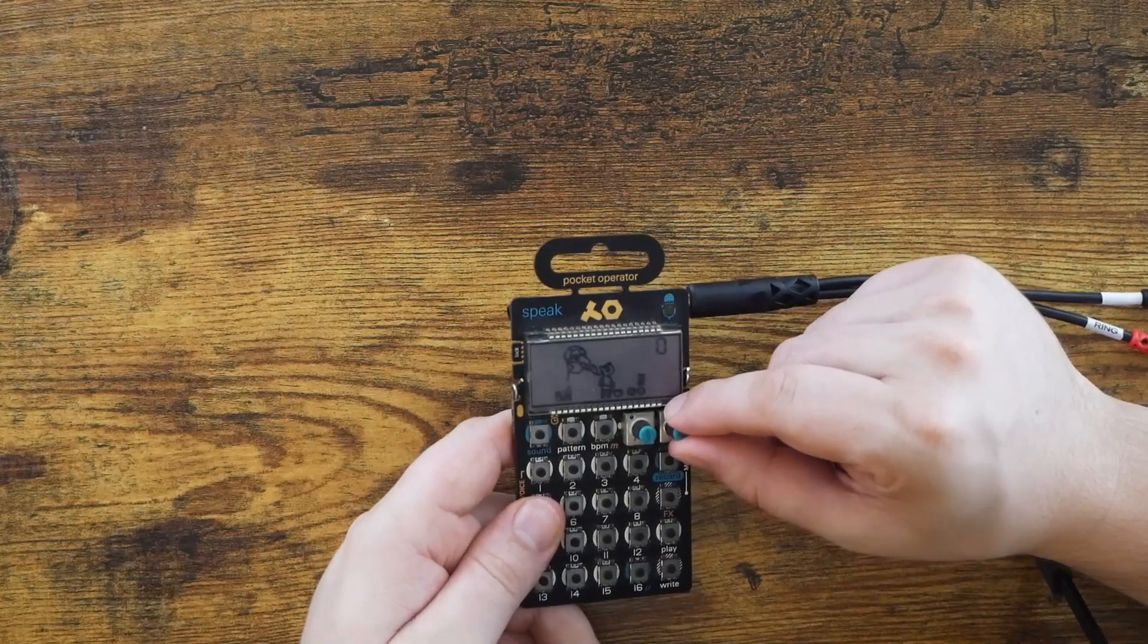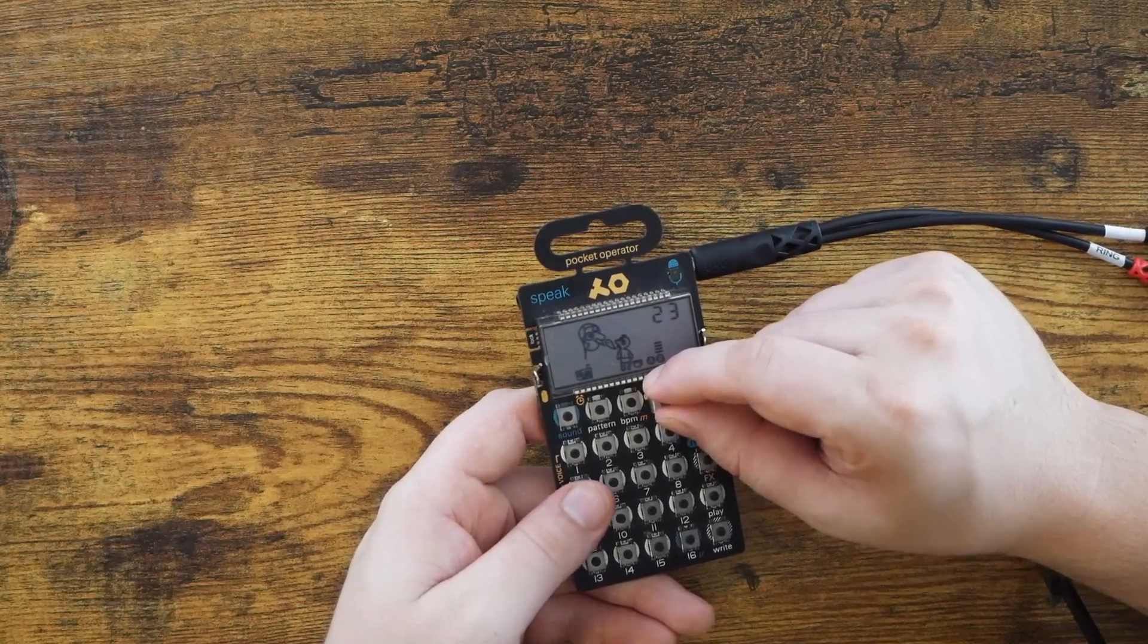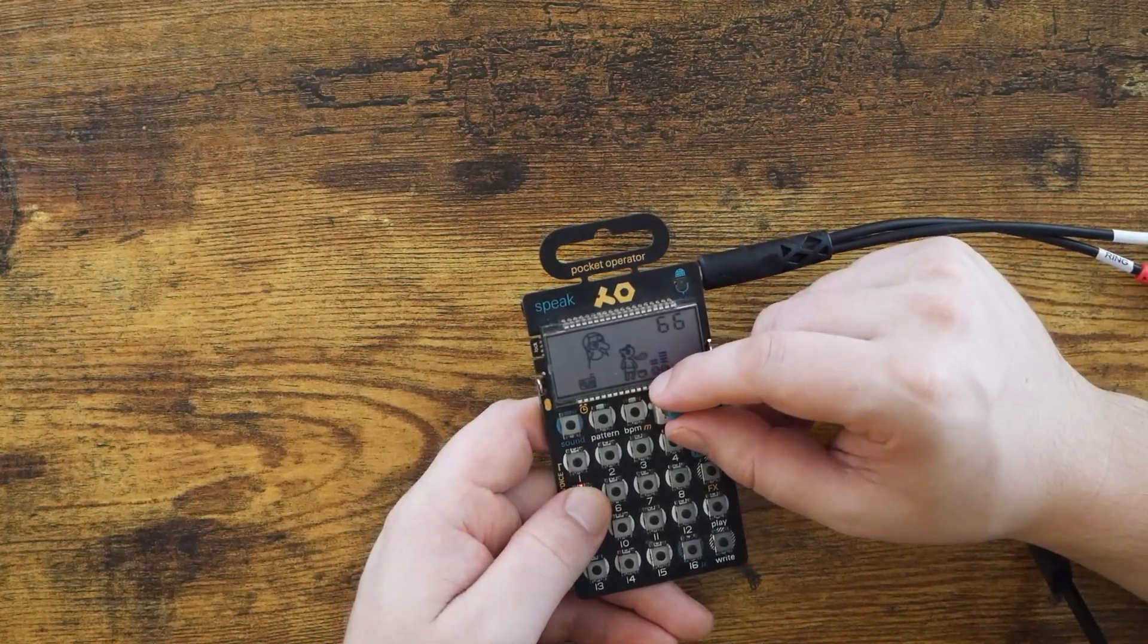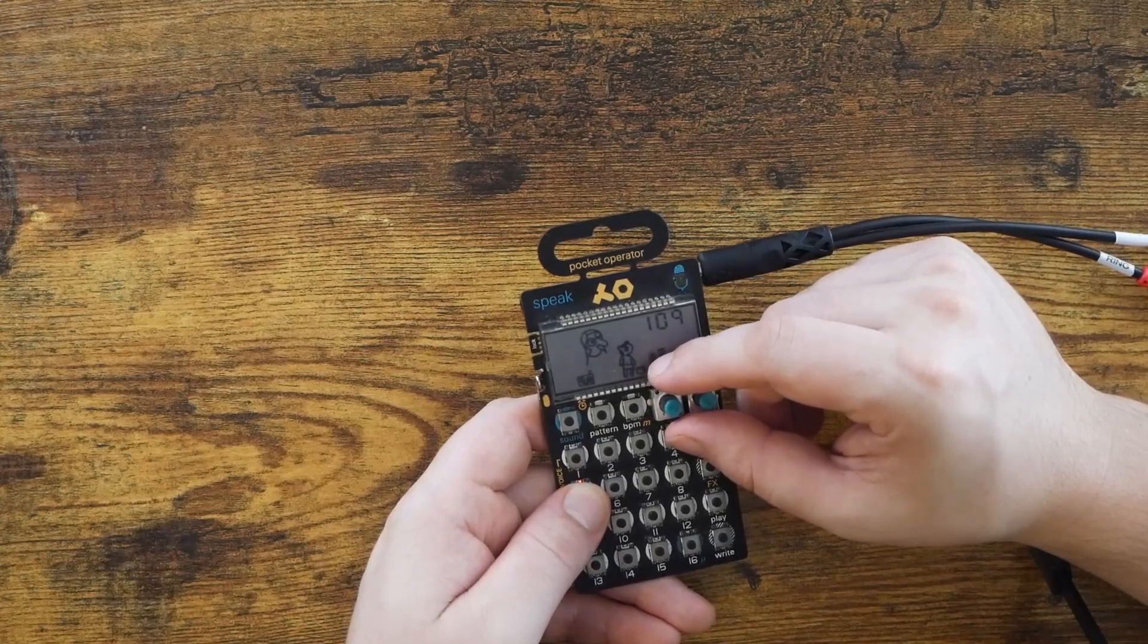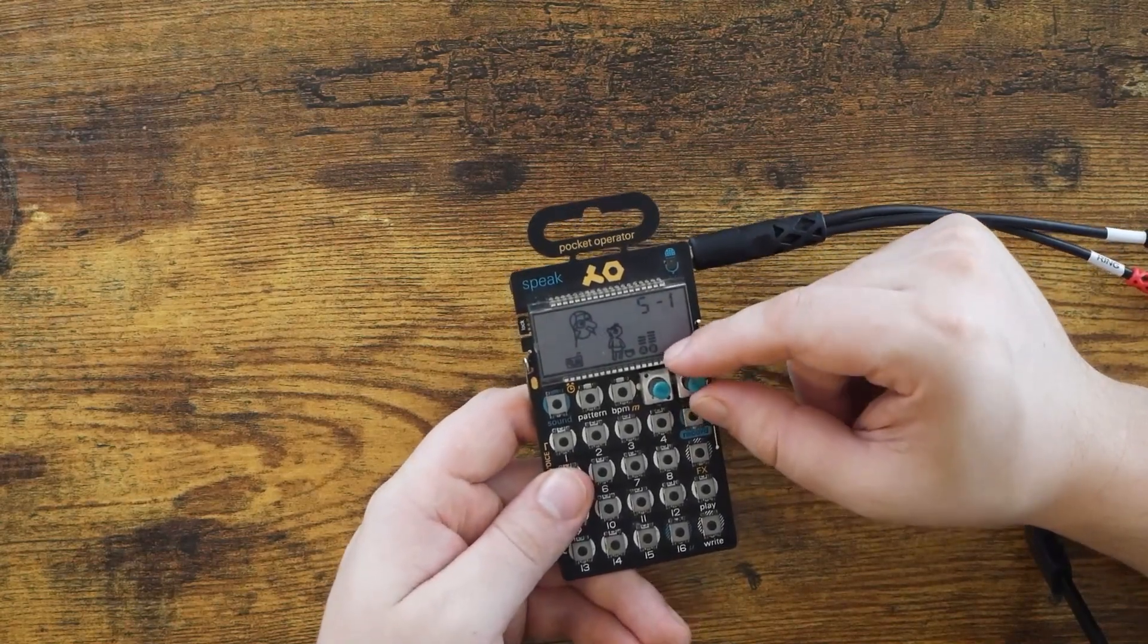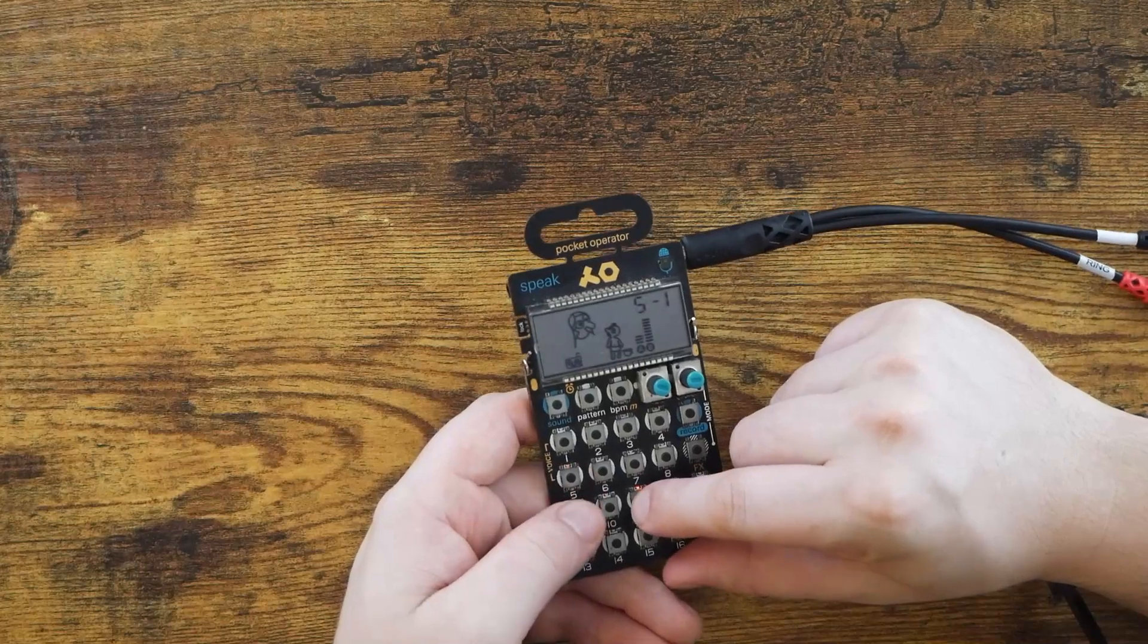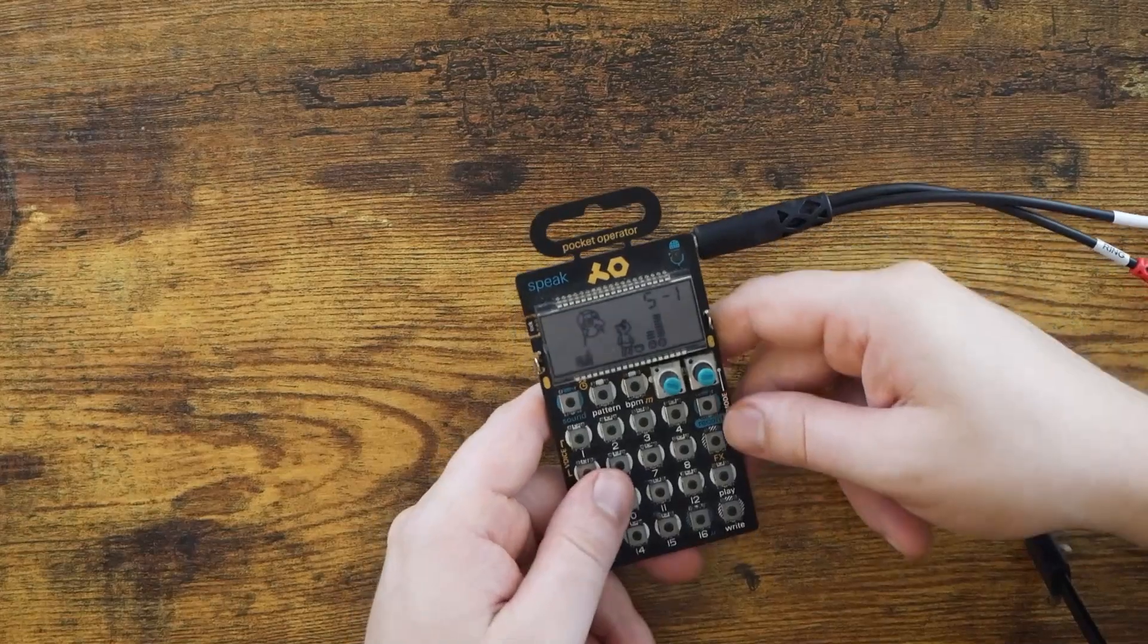But for now I'm going to leave speed at zero. Now we can use knob A to determine the start point of the sample. So what I want to do is try to find the footsteps. Now let's speed it up. Not the prettiest sound, but that's okay.